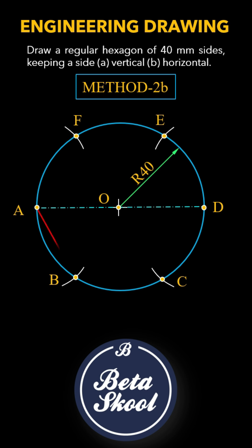Finally, join points A, B, C, D, E, F, and A in sequence. And there we have it. The regular hexagon is complete.